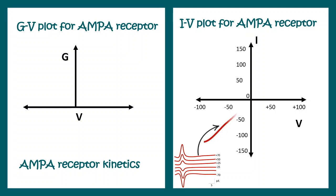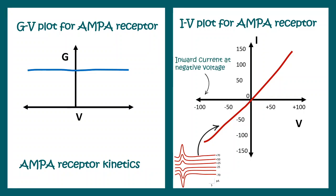For AMPA receptors, the IV plot shows inward current at negative voltage and outward current at positive voltage, with a reversal potential of zero. The GV plot looks like a flat line, meaning changing voltage causes no change in conductance. So AMPA receptors are voltage-independent, which is expected because AMPA receptors are ligand-gated ion channels, not voltage-gated ion channels — that's why their conductance is voltage-independent.